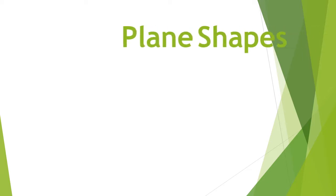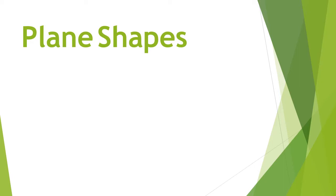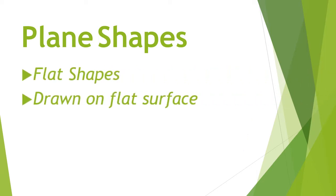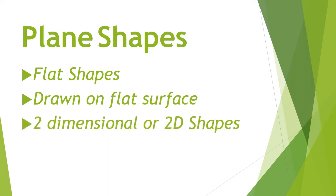Children, let's understand what are plane shapes. Plane shapes are those that can be drawn on a flat surface such as paper. They have only two dimensions — length and breadth. So plane shapes are also known as two-dimensional or 2D shapes.